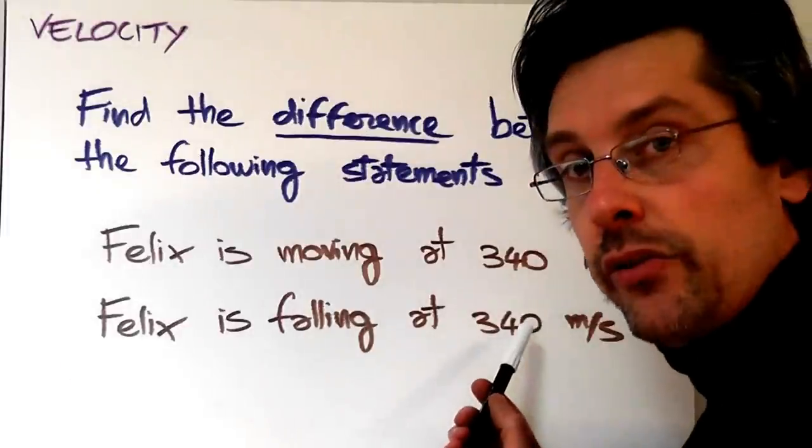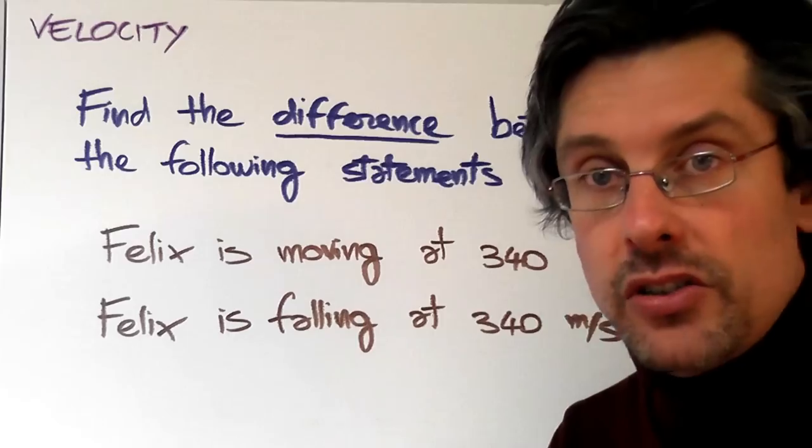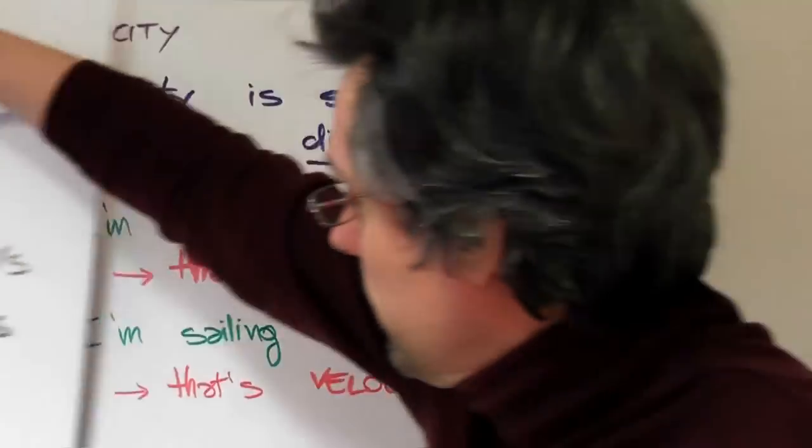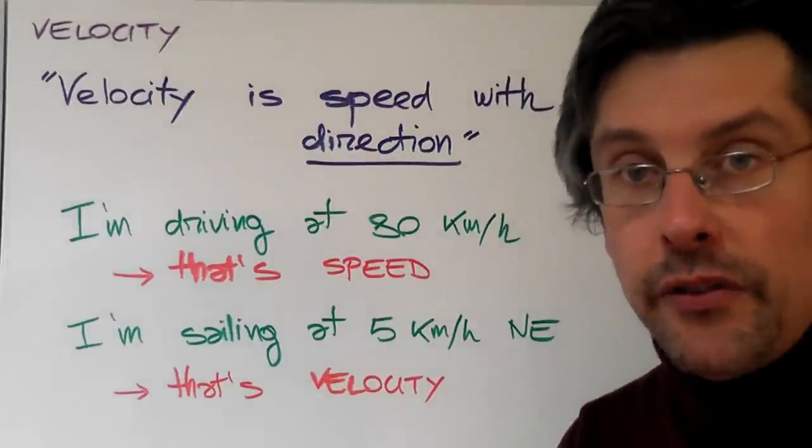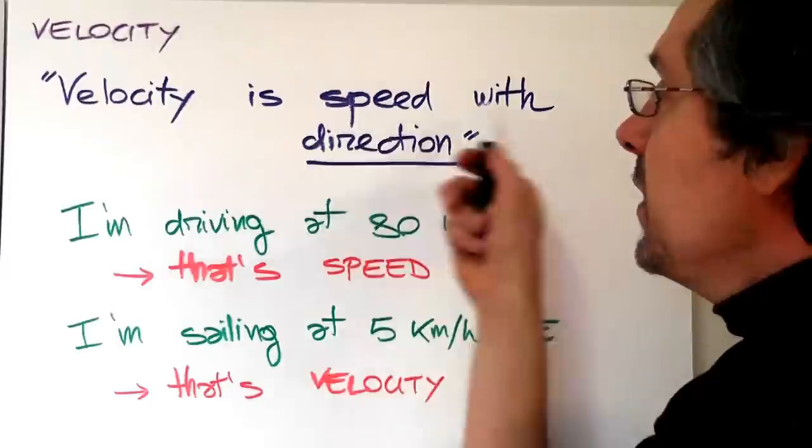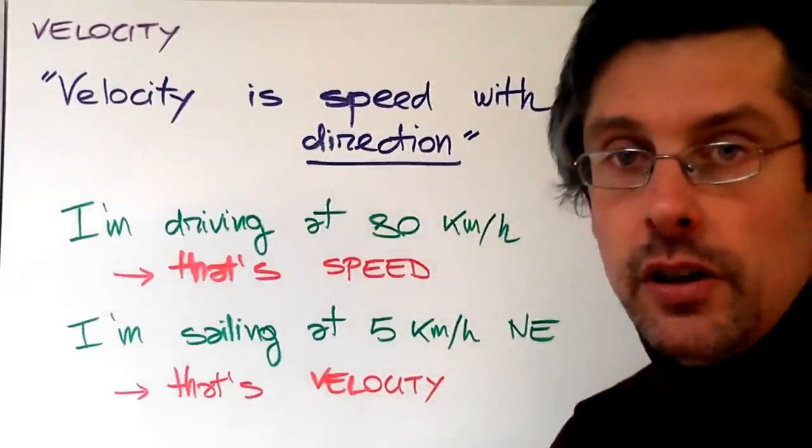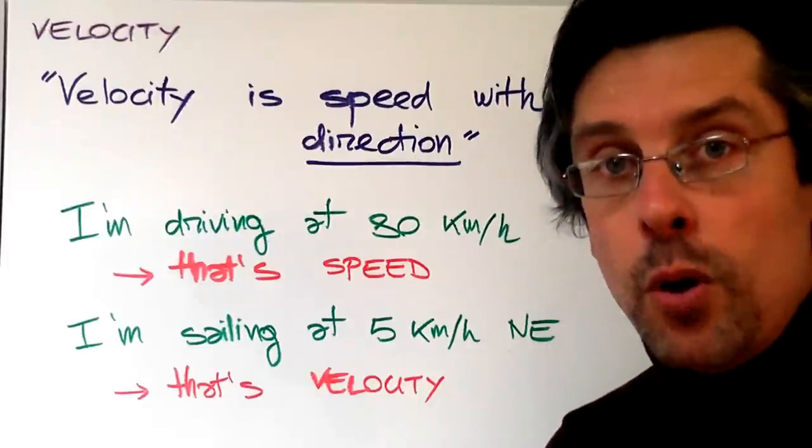When you have this extra information, in physics we say that we're dealing with velocity. In fact, in physics, velocity is defined as speed with direction. So we have extra information. Velocity is telling you something more.